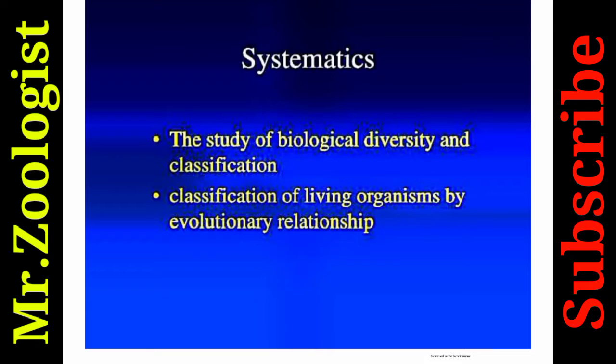What is systematics? Systematics is the study of biological diversity and classification. Diversity means how species are diverse in their function and in their body forms. Classification of living organisms is based on evolutionary relationship, which means classifying organisms based on their common ancestors or forefathers — that is, evolutionary relationship.